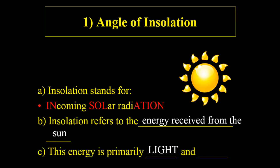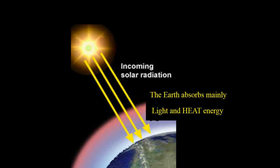This energy is primarily light and heat — we talked about that when we looked at the electromagnetic spectrum and the energy that comes from the sun. Now we're going to look at the way the Earth receives the sun. In this picture we see incoming solar radiation and we see the Earth absorbing mainly that light and heat energy.